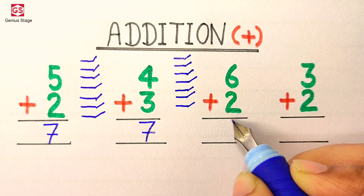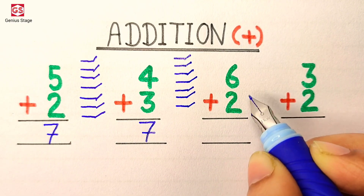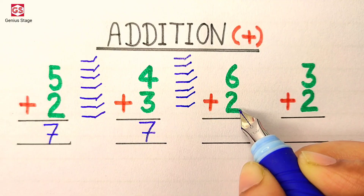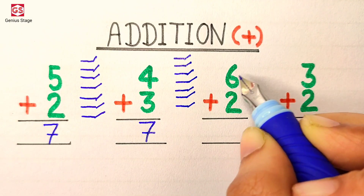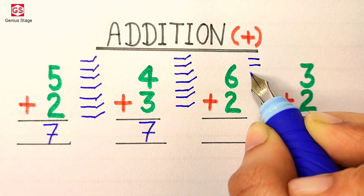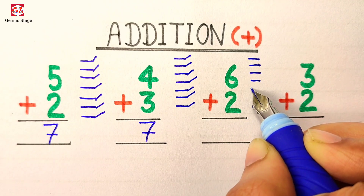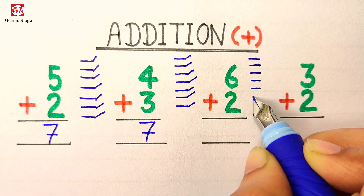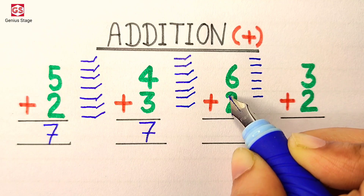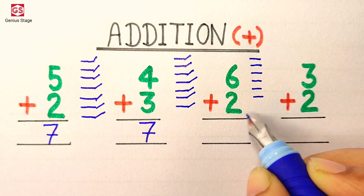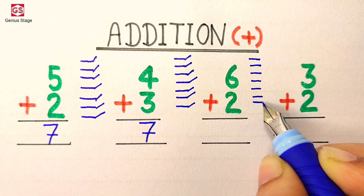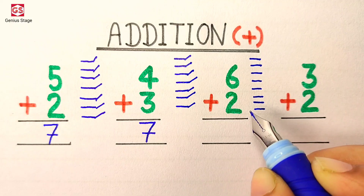In the third question, we need to add 6 to 2. So first we will draw 6 lines: 1, 2, 3, 4, 5, 6. Below the 6 it says 2, so we will draw 2 more lines: 1, 2.